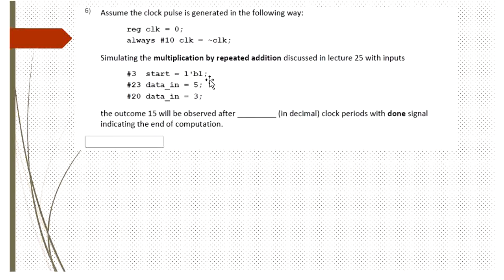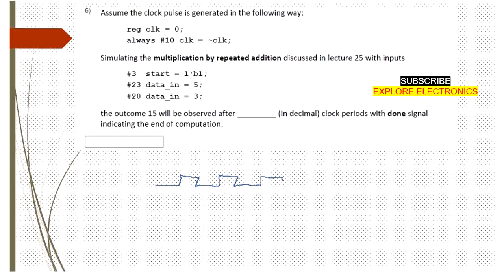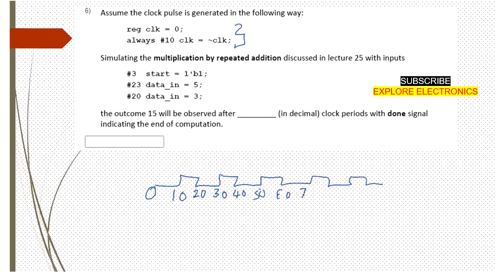The next question is related to timing with respect to the multiplication example. The clock is initially 0, and every 10 time units the clock changes its state. So the clock starts at 0, becomes 1 at 10 time units, 0 at 20, 1 at 30, 0 at 40, 1 at 50, 0 at 60, 1 at 70, and so on.